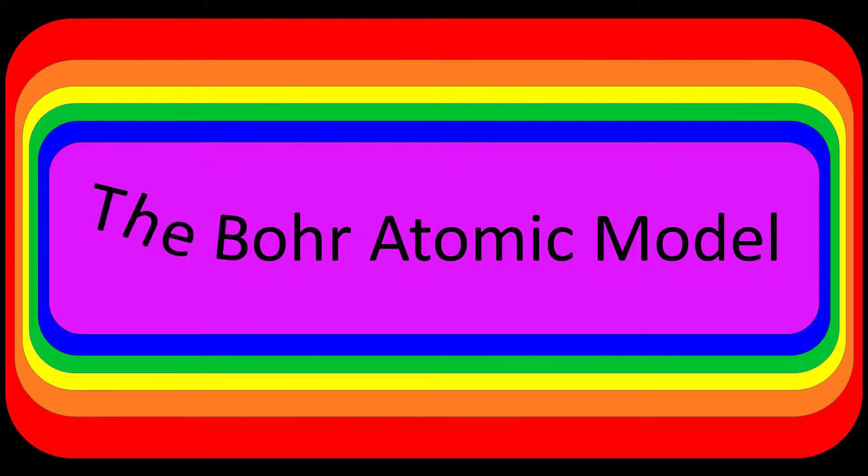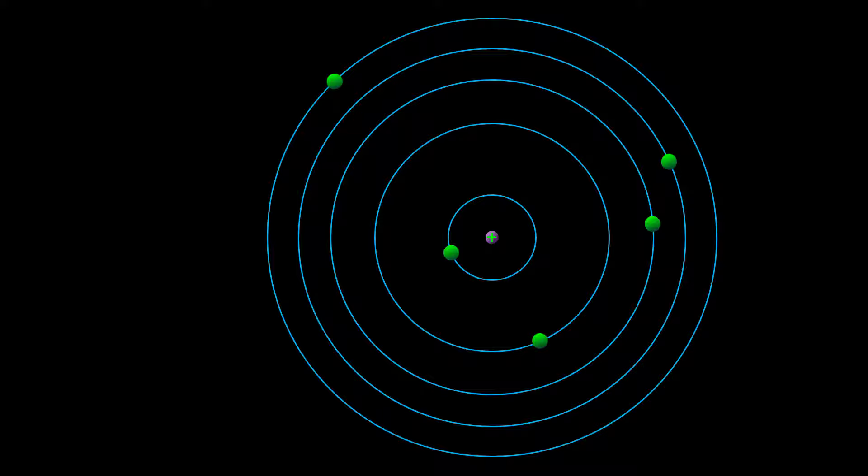Welcome to the Bohr atomic model in which we will take a look at how light energy and electron energy led Niels Bohr to proposing his planetary model of the atom. Let's see what Bohr knew back in 1913 that allowed him to develop his model of the atom.